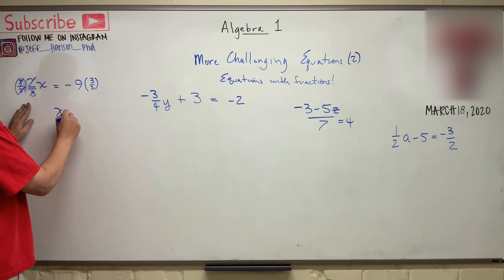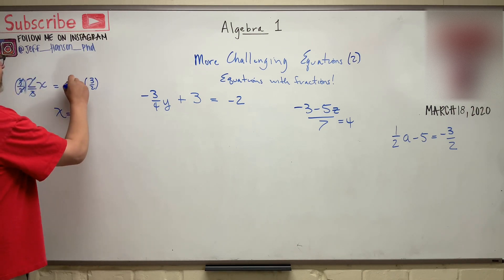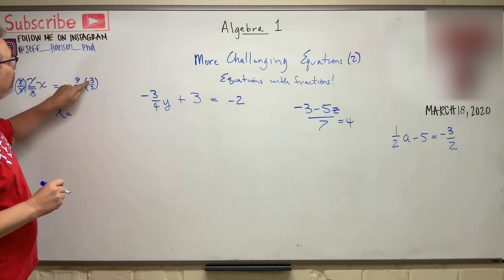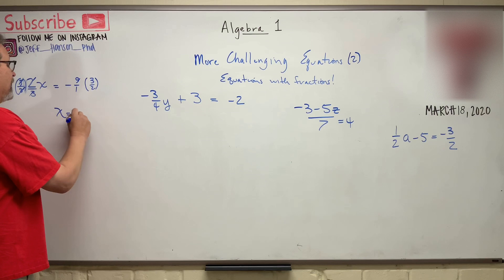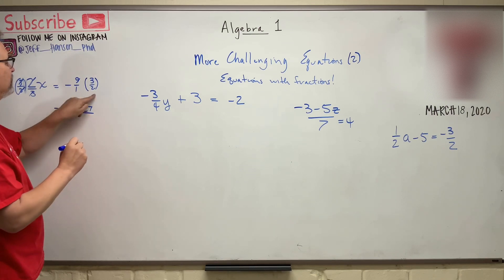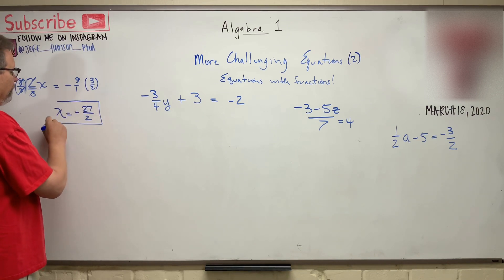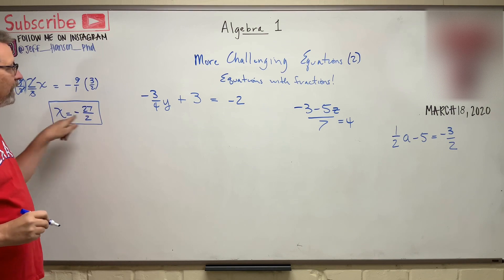So x is equal to, and remember, I can do this, right? This nine can be a nine over one. Nine times three is what? Negative twenty-seven over one times two is just two. There's your first one. Got x all by himself.